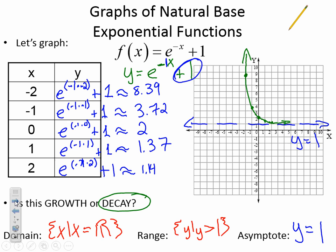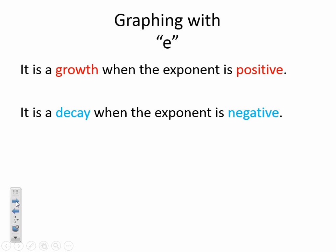This is the last thing I need you guys to get into your notes, please. When we're graphing with e, it is a growth when our exponent is positive. So like our first example, we had a positive exponent. And it is a decay when our exponent is negative. So that was like our second example that we did. Please make sure you get this into your notes. It will come in handy.